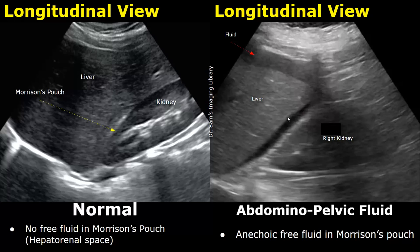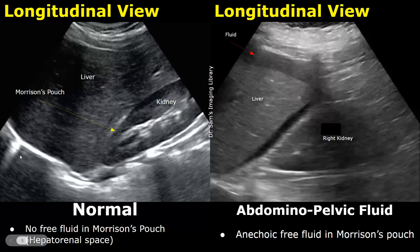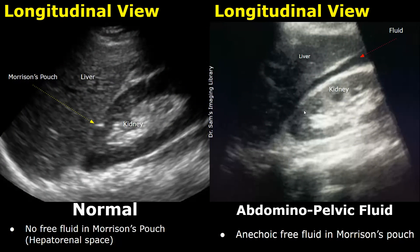We can see anechoic free fluid in Morrison's pouch. During this scan, we can also examine the subphrenic and pleural spaces to look for any free fluid in these areas. Here we have another image of abdominal pelvic fluid — we can see a significant amount of anechoic free fluid between the liver and right kidney.